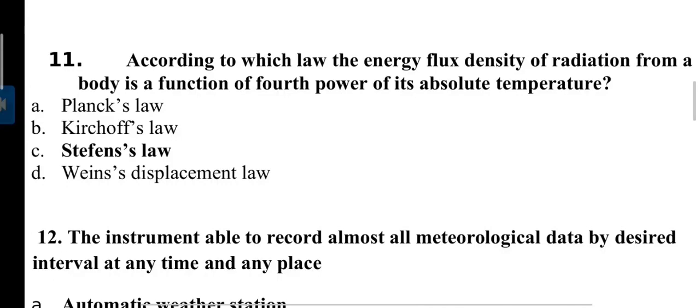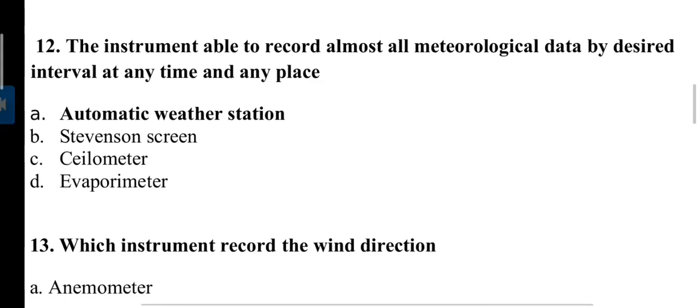According to which law: the energy flux density of radiation from a body is a function of fourth power of its absolute temperature. This is a very famous statement of Stephen's law, given in the year 1860. Next, the instrument able to record almost all meteorological data by desired interval at any time and any place is automatic weather station. Stevenson screen is a type of shield which protects instruments from precipitation and direct radiation.